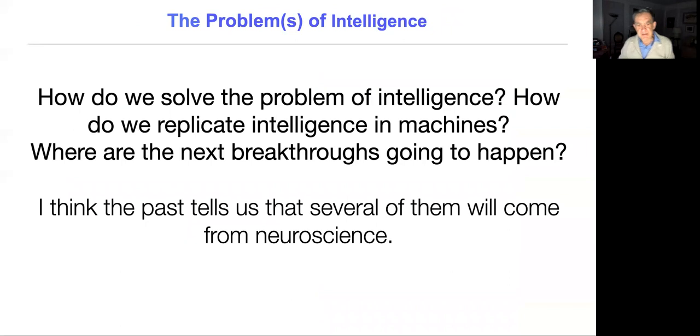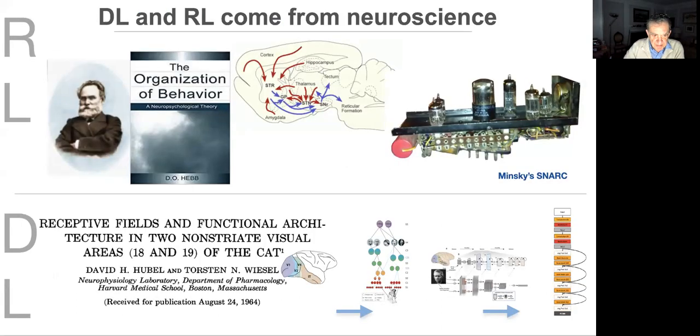You can ask, where are the next breakthroughs going to come from? My personal belief is that a good chance is that several of them will come from neuroscience, from understanding how the human brain creates intelligence. My belief is that we need first the natural science of intelligence—neuroscience, cognitive science—in order to get to the engineering of intelligence. Both reinforcement learning and deep learning come, in fact, from neuroscience.